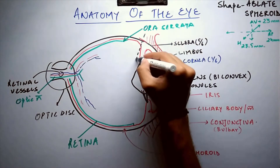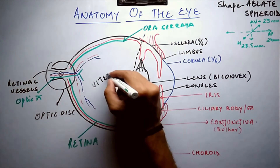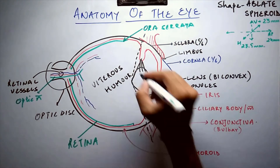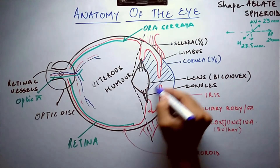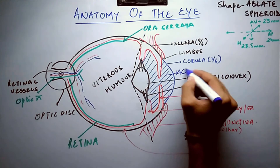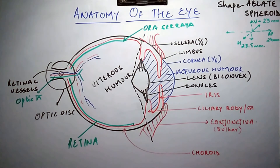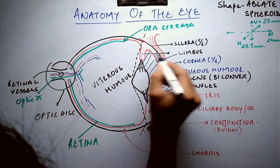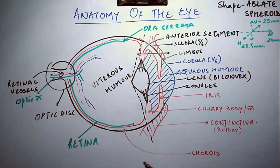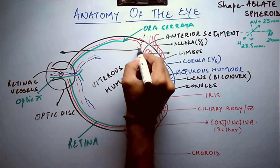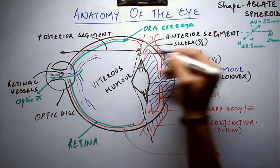The eyeball can be divided into two segments, shown by a demarcated line. The anterior portion is the anterior segment, and the posterior portion is the posterior segment, which is filled by the vitreous humour, a jelly-like fluid. The demarcated line is actually formed from the posterior part of the lens.